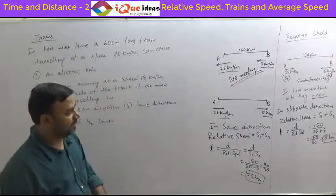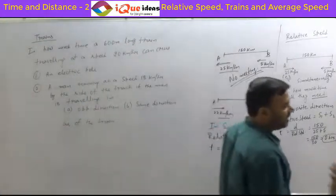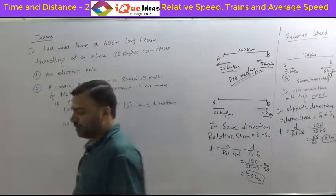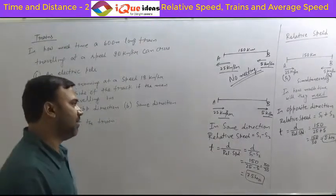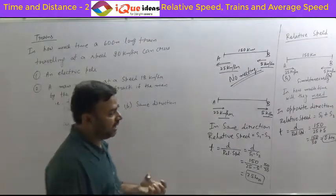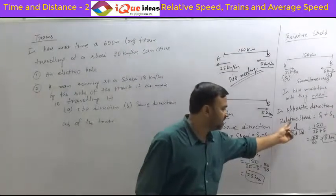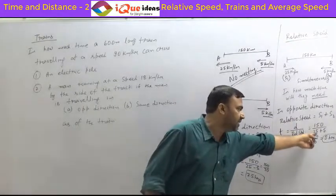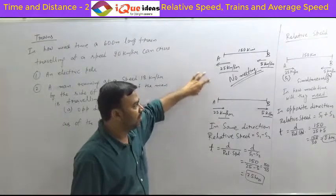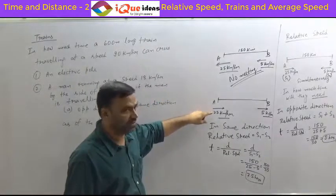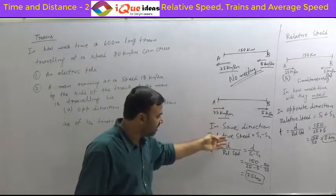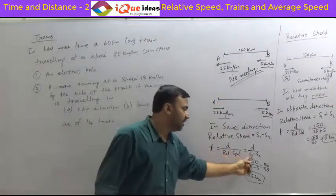In case of relative speed, just remember: the word relative only applies when two things are moving. If they are moving in opposite directions, their speeds get added, and time equals distance divided by that relative speed. If they are moving in the same direction, first check whether meeting is possible — it is possible only when the faster one is behind the slower one. Then relative speed is S1 minus S2, and time equals distance divided by S1 minus S2.